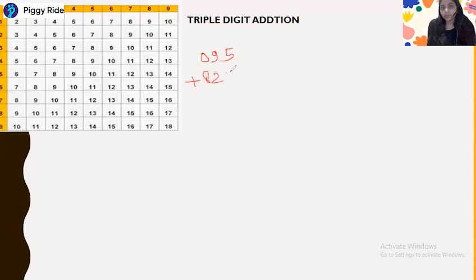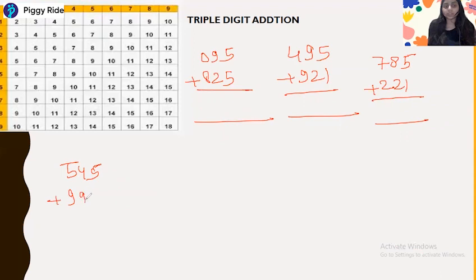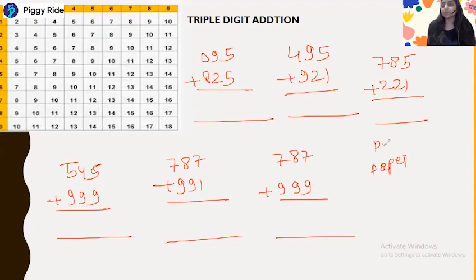For homework, solve these problems: 095 plus 825, 495 plus 921, 785 plus 221, 545 plus 999, 787 plus 991, 787 plus 999. Solve all these at home without paper, pen, or fingers — just remember the end number and increase by 1 whenever the next pair is a carry number.